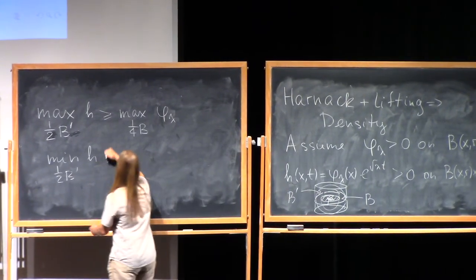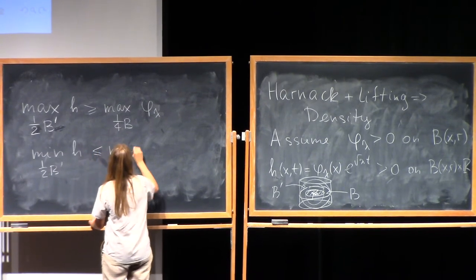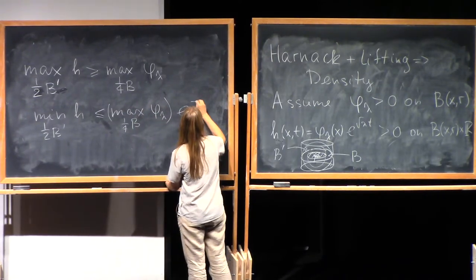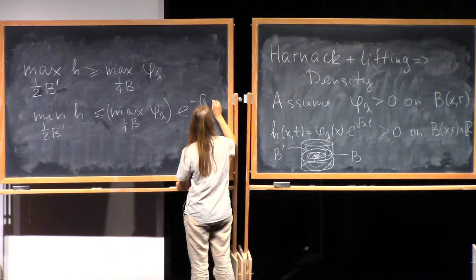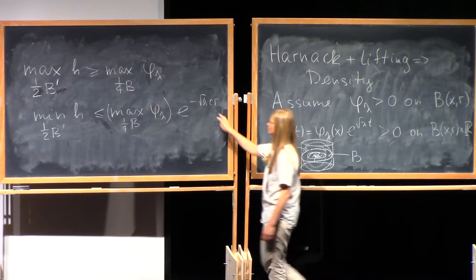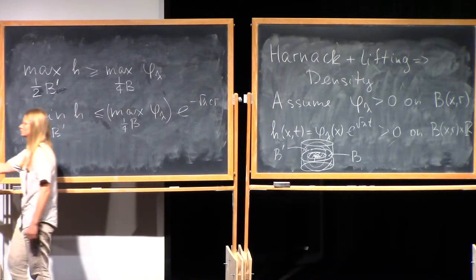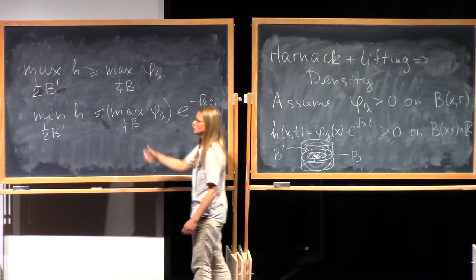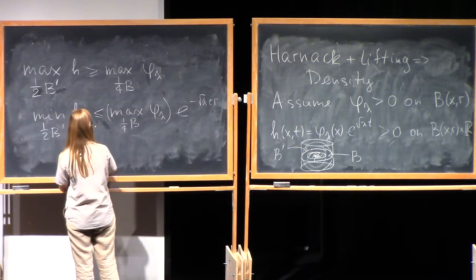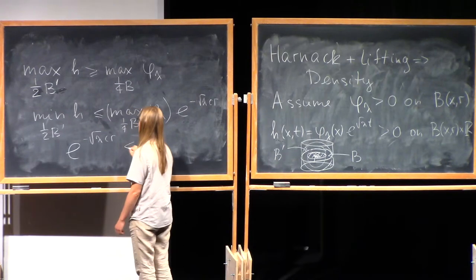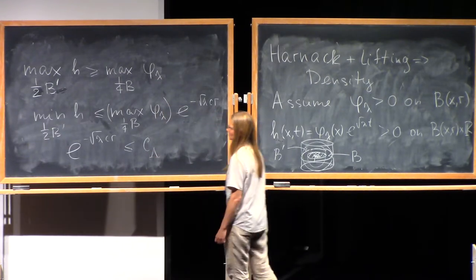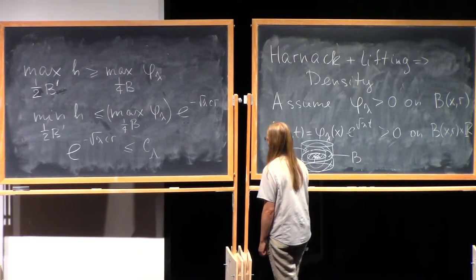So the minimum is less than or equal to the maximum over this all, phi lambda, but now multiplied to e to minus square root of lambda cr. You can compute r. You can compute what the constant c is. It's an absolute constant. But compared to the Harnack inequality, we see that the ratio between maximum and minimum should be bounded under this term here.